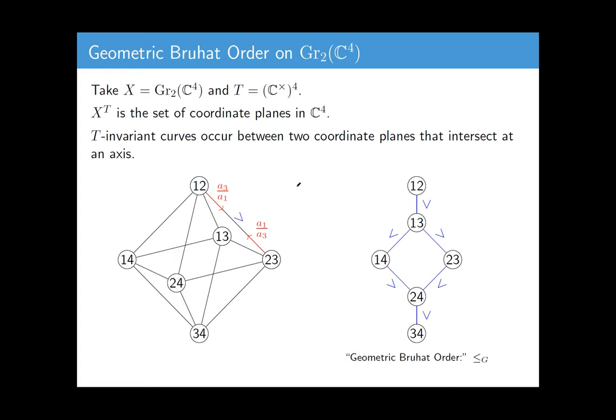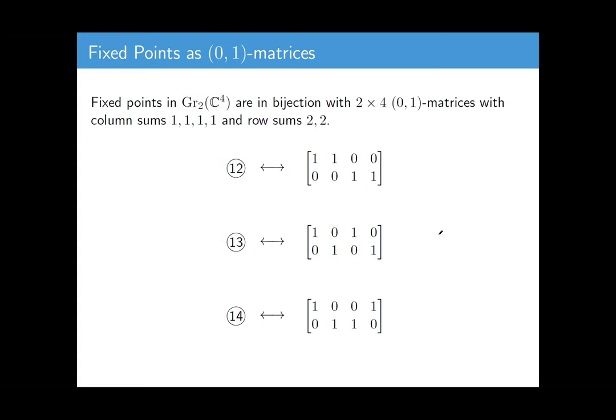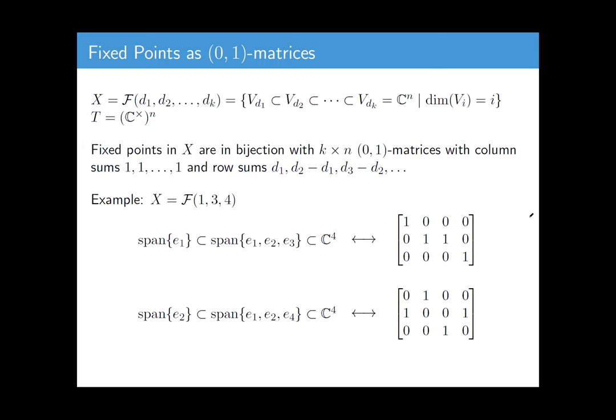I will note that it does agree with maybe the normal Schubert calculus notion of the Bruhat order. So that's good. So this is maybe the main geometric objective to study for me today. But I want to make another point about these fixed points. In this case, with Grassmannian Gr(2,4), the fixed points are in bijection with 2 by 4 matrices that only contain zeros and ones, such that every column sums to 1, and every row sums to 2.